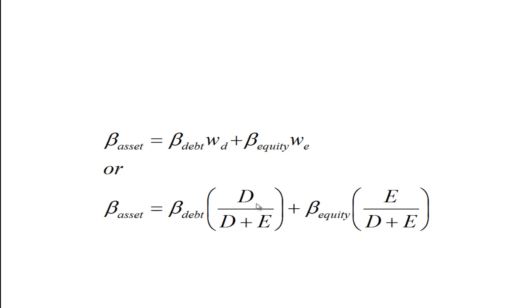WD represents the proportion of debt used to finance the firm, and WE represents the proportion of equity used to finance the firm. So it's just an average of these two. If we want to expand these, the weight would just be, for debt, debt divided by debt plus equity. And for equity, it would be equity divided by the total value of the firm, which is debt plus equity.